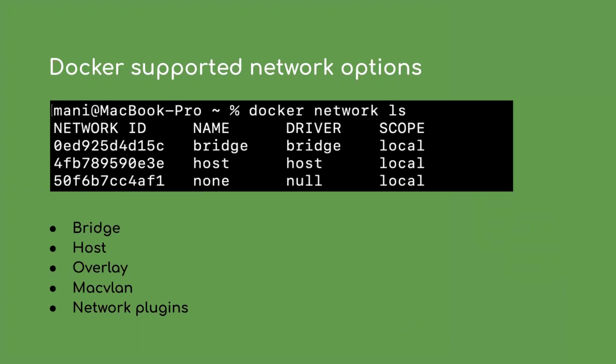Host network is an option to bypass network isolation for a container, which means the container runs with other isolations like storage, RAM, and processing, but uses different namespaces other than the network namespace. None is an option to disable network for a container — some containers don't require any network interaction where independent computations exist. But these three options don't solve most real use cases, so Docker supports other network options as well: overlay network, MACVLAN, and some third-party network plugins.